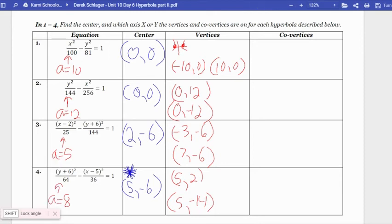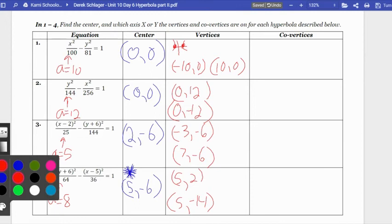We're going to do the same thing with the co-vertices, but they come from the second number and we're going to end up doing kind of the opposite of what we did with the vertices. What I mean by that is, for number one to find the vertices, we went 10 left and 10 right. For number one to find the co-vertices, we're going to go not left and right but up and down. 81 is underneath y; that means up and down. We're going to go up and down 9 from the center, so we're going to go (0, 9) would be up 9 from the center, and (0, -9) would be down 9 from the center.